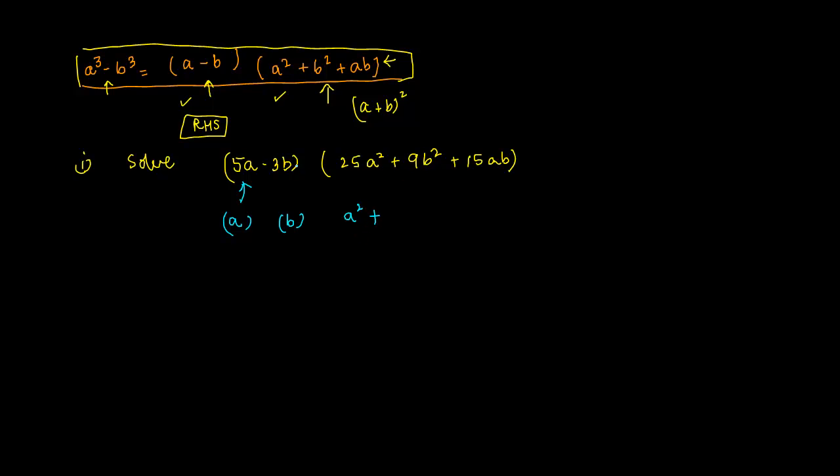Plus ab, which is 5a × 3b = 15ab. So this is ab, applying this identity.